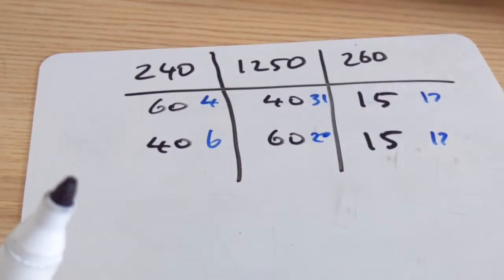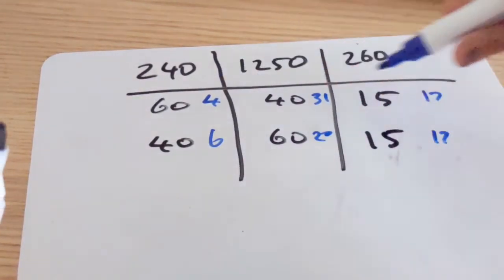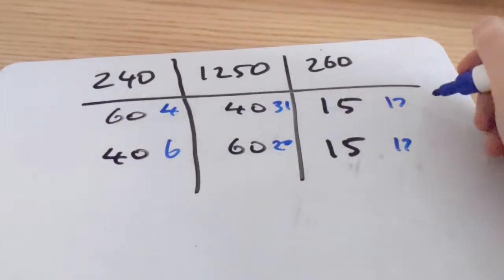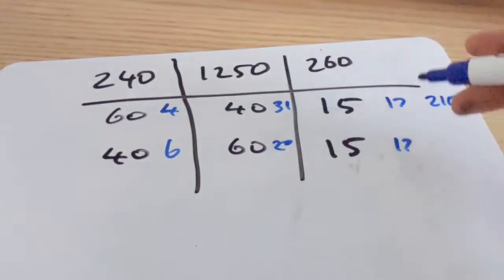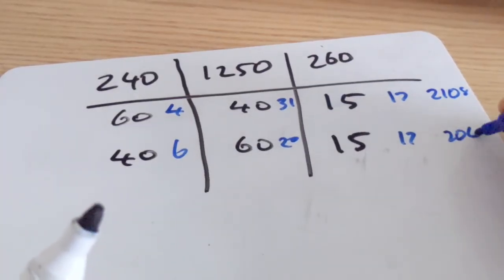Just like before, what I do now is multiply along the rows. So 4 by 31 by 17 and that gives me 2108. And then multiply along here again gives me 2040.